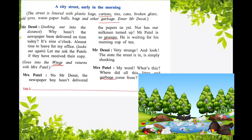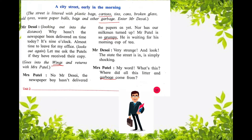Now, one interesting character is Mr. Desai. He was looking out from his balcony. He said, 'Why hasn't the newspaper been delivered on time today? It's nine o'clock.' Mr. Desai wanted to go to the office and was waiting for the newspaper, which had not come. So he was quite worried and thought he would ask Mrs. Patel. So he went to Mrs. Patel's house.